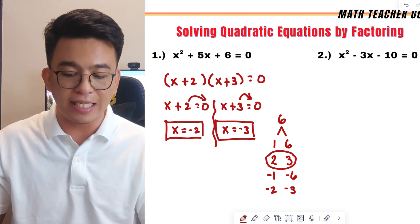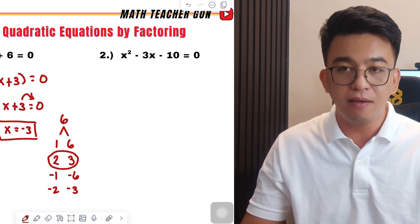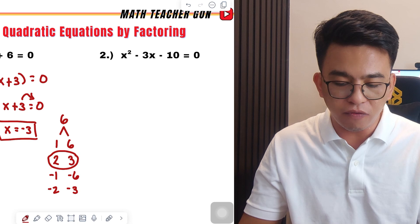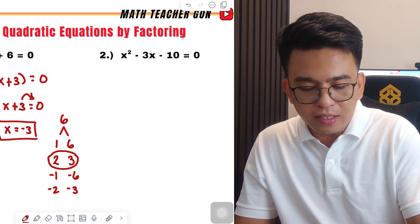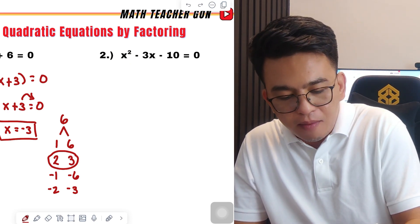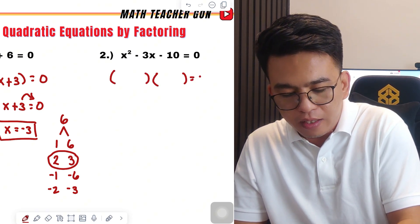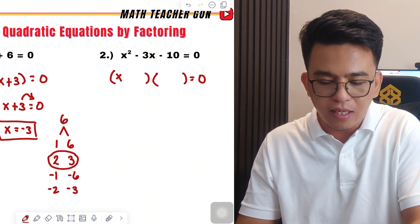Now, let's move on with the second example. For the second example, we have x squared minus 3x minus 10 is equal to zero. So, how are we going to solve for this equation? Since the first term is x squared, what will happen here is that we prepare two sets of parentheses, then equal to zero. And automatically, we have here x and x.